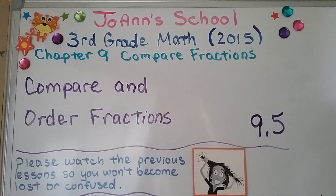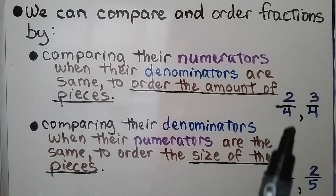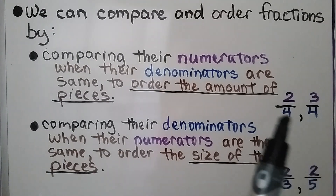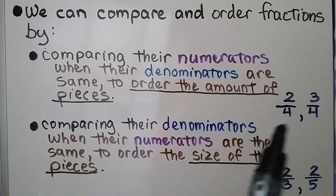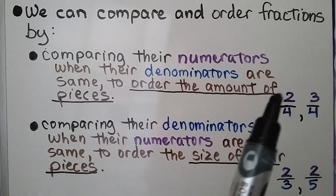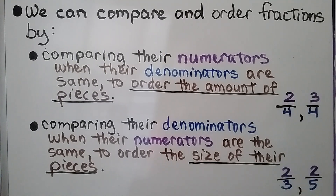Lesson 9.5, third grade math — we're going to compare and order fractions. We can compare and order fractions by comparing their numerators when their denominators are the same. We can order the amount of pieces. Here we have 2-fourths and 3-fourths; the denominators are the same, so we compare their numerators — that tells us the difference in how many pieces there are.